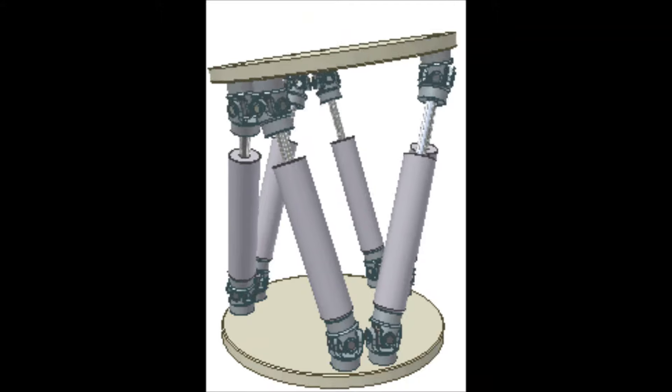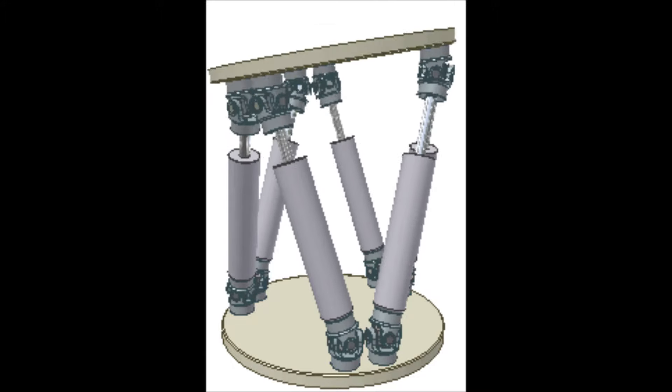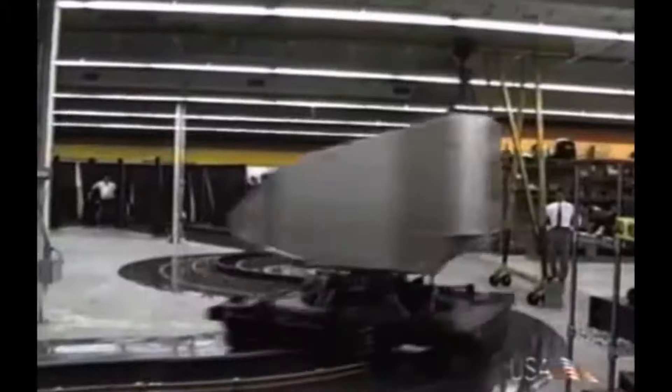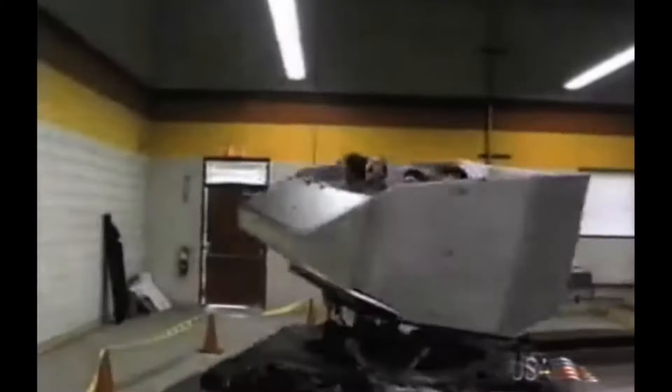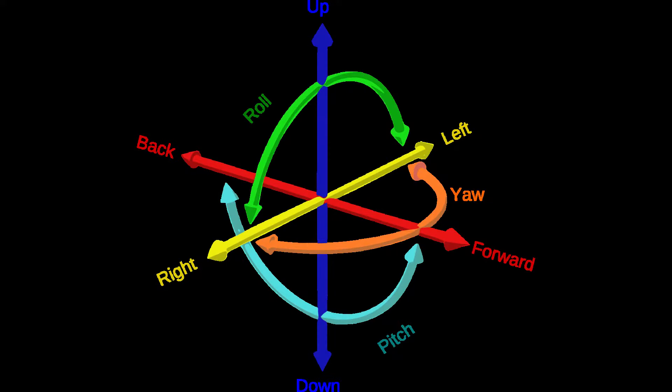This image shows the general movement of the Stewart platform, which allows six degrees of freedom. Each degree is a different direction of motion the car can make. Three degrees are the typical X, Y, and Z axes found on a 3D plane, and the others are movements similar to arcs along each axis that change the direction which the vehicle is pointing.